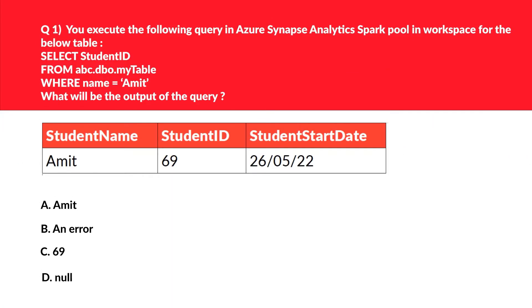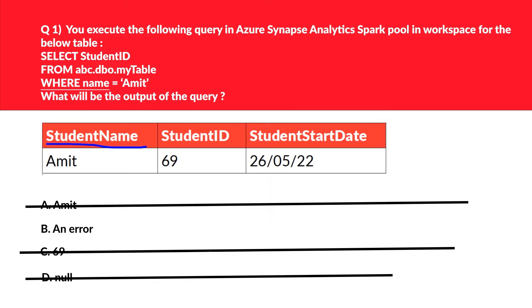Welcome to part 1 of DP-203. Since it's a data engineering certification, you got to be prepared about SQL queries. If you look at the WHERE clause in the question, we can see that we are looking for a column named 'name' which doesn't exist in the table, marked in blue. When we query it, it will definitely throw an error — instead there is a column named 'student name' in the table.